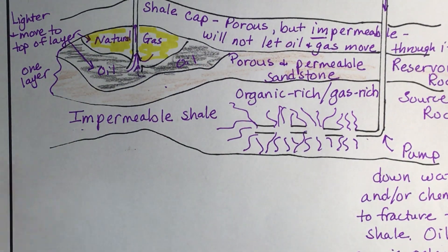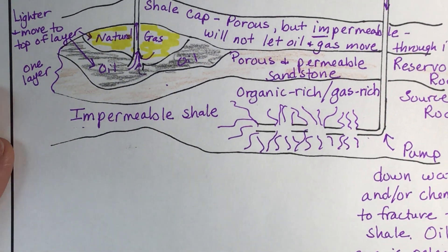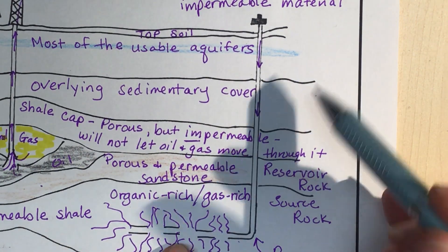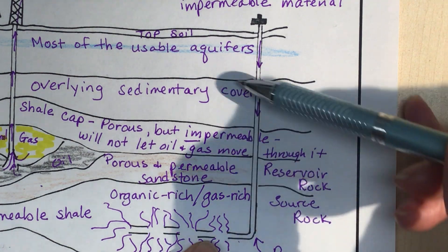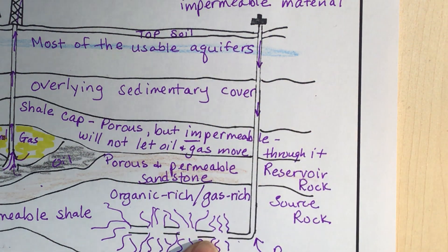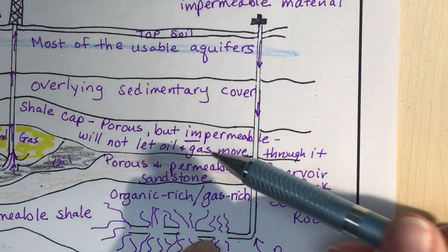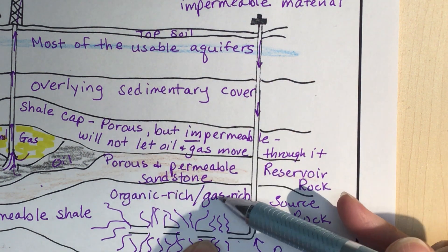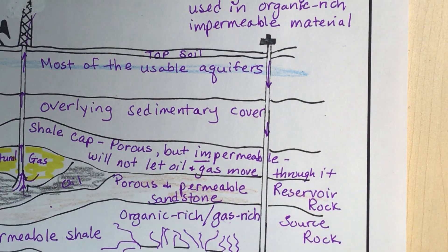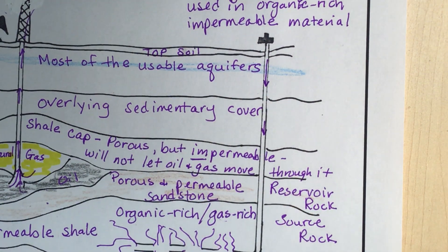Everything on the diagram is important to know. One of the problems with fracking is that if there are aquifers nearby, the fractures can extend into an aquifer and contaminate the drinking water of people who have wells drawing from those aquifers.